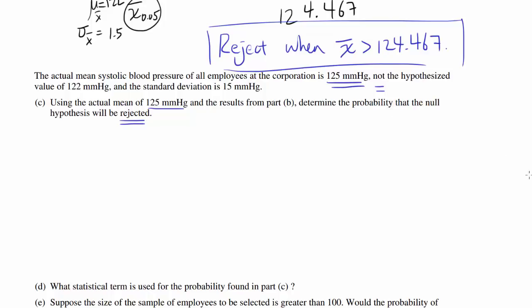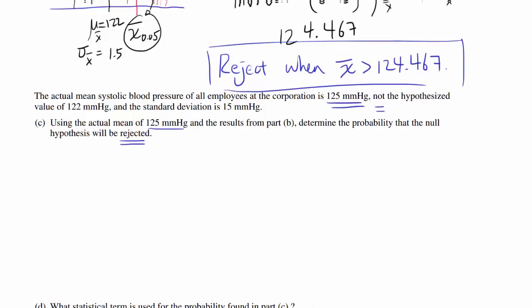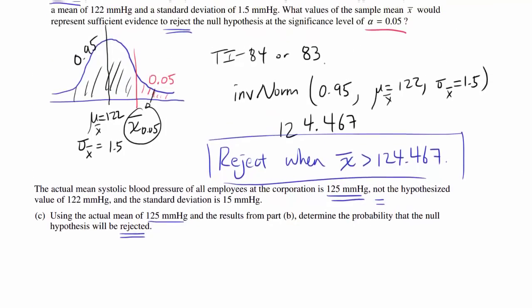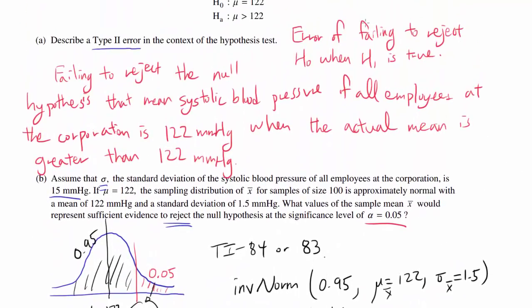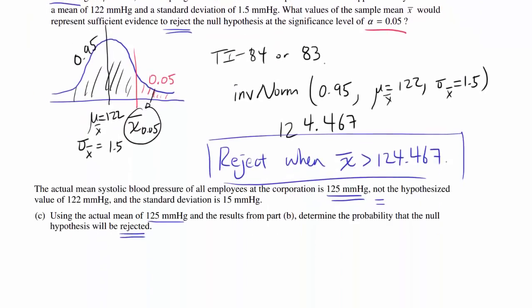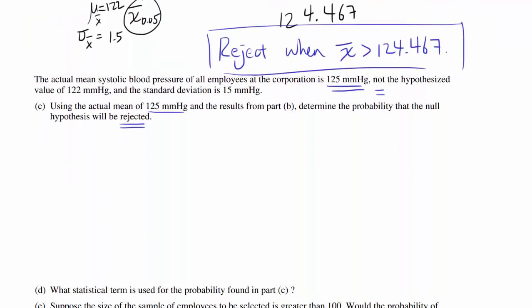If we do not reject the null hypothesis when the alternative hypothesis is correct, we commit a type 2 error. We don't want to do that, so we want to find the probability of rejection.